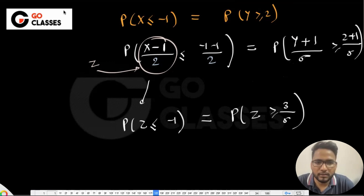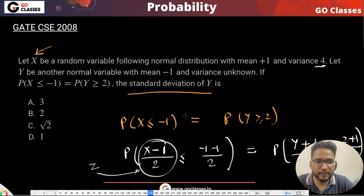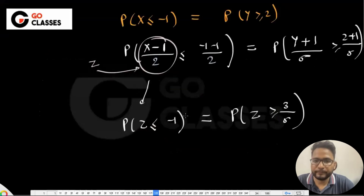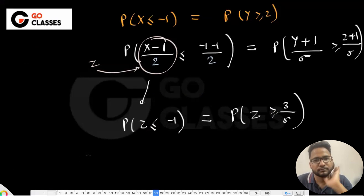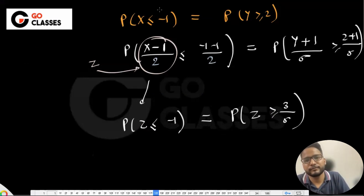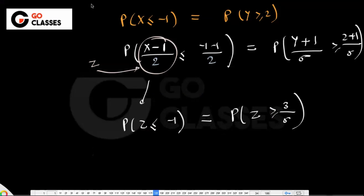In the numerator it is Y minus the mean. The mean of Y is minus one, so it becomes Y plus one. On the right-hand side, 2 plus 1 gives 3 upon sigma. So how do we solve this and find sigma?